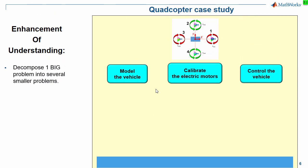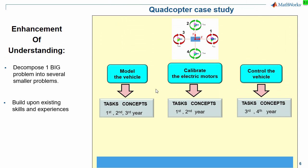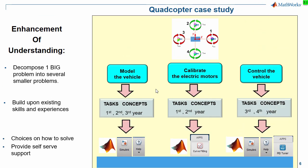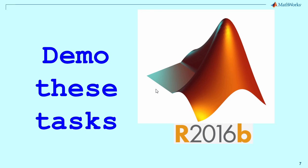Using the quadcopter case study, we're going to look at three sub-problems: modelling the vehicle, calibrating the electric motors, and designing the control systems. In each sub-problem we'll look at a collection of learning tasks covering concepts from years one through four of a typical science or engineering degree. While exploring these tasks, keep your eye open for instances where we're looking at code, block diagrams, or apps — these are choices for how we discuss concepts. Also watch for the built-in help system acting as an ever-present companion.